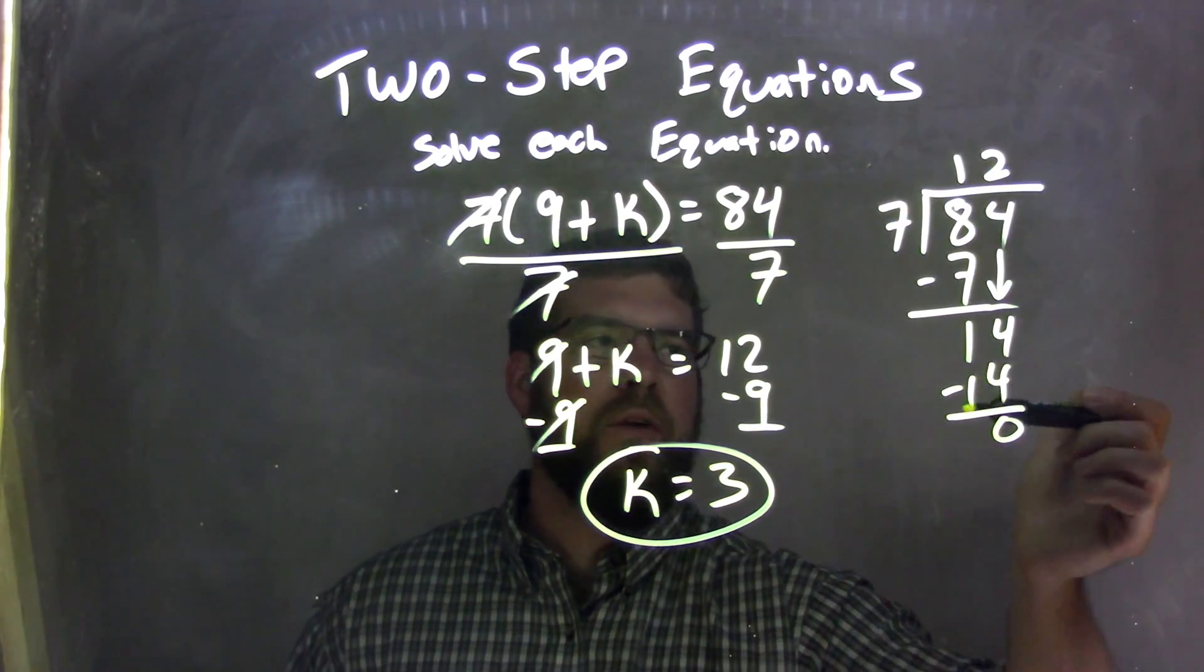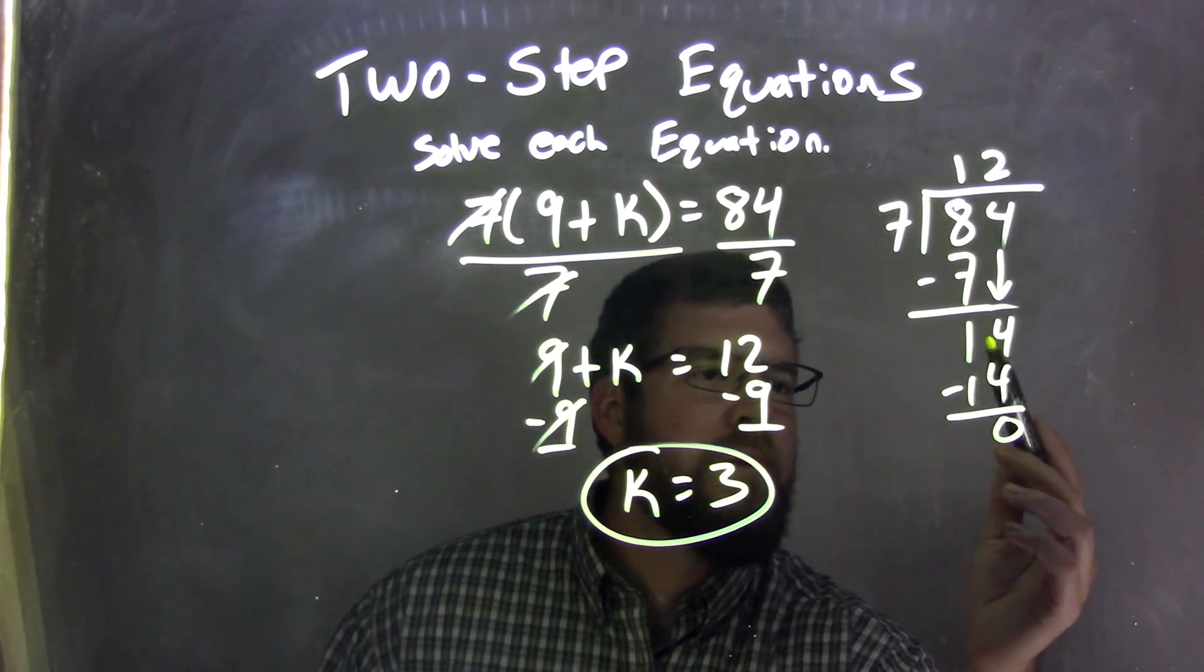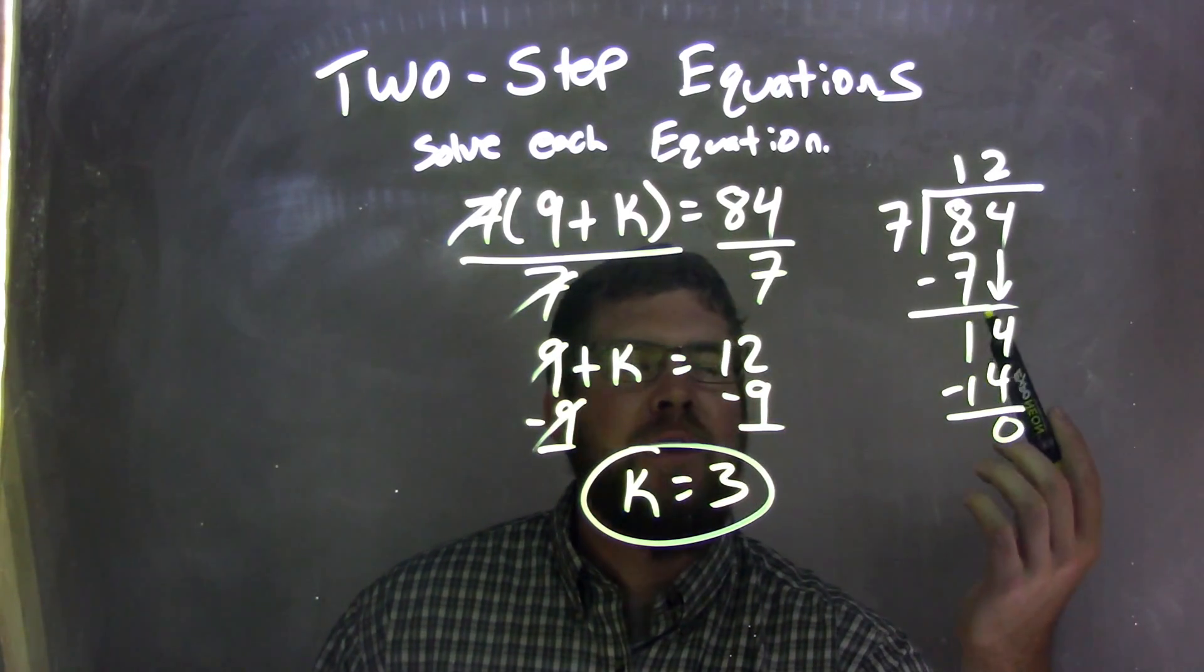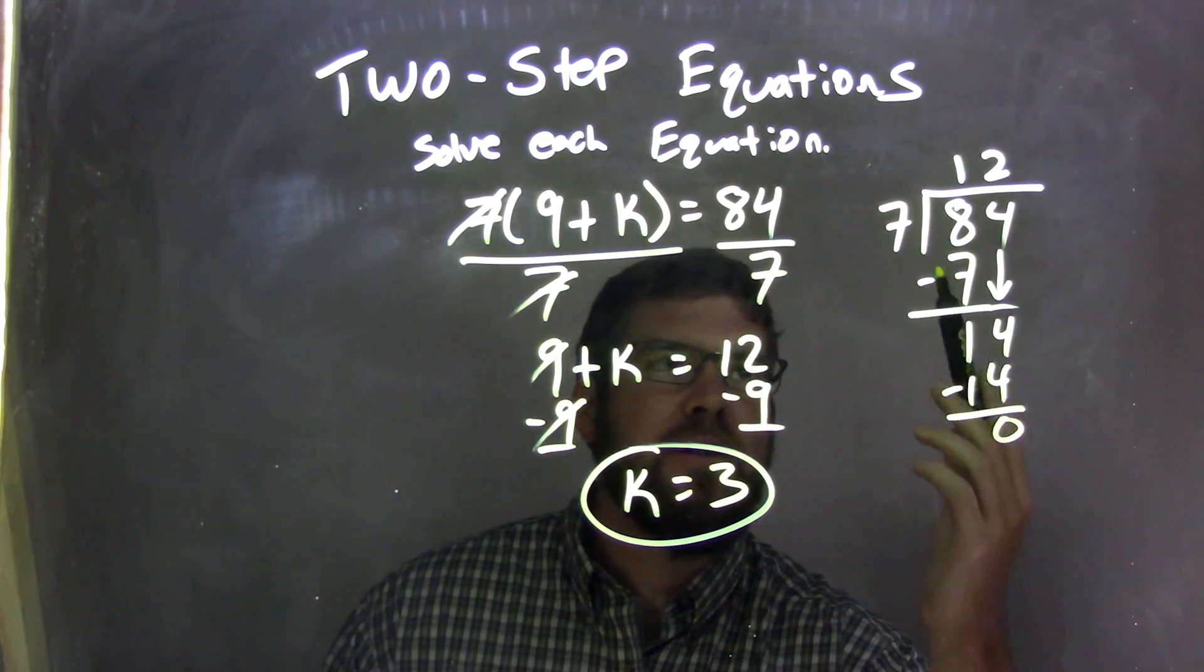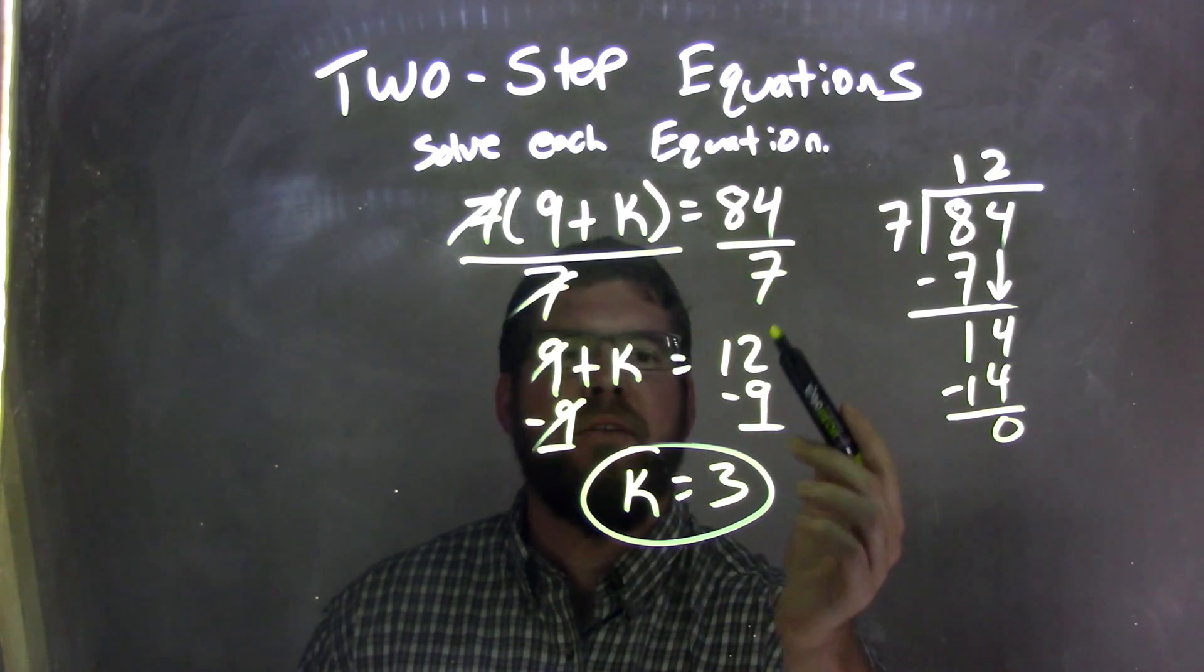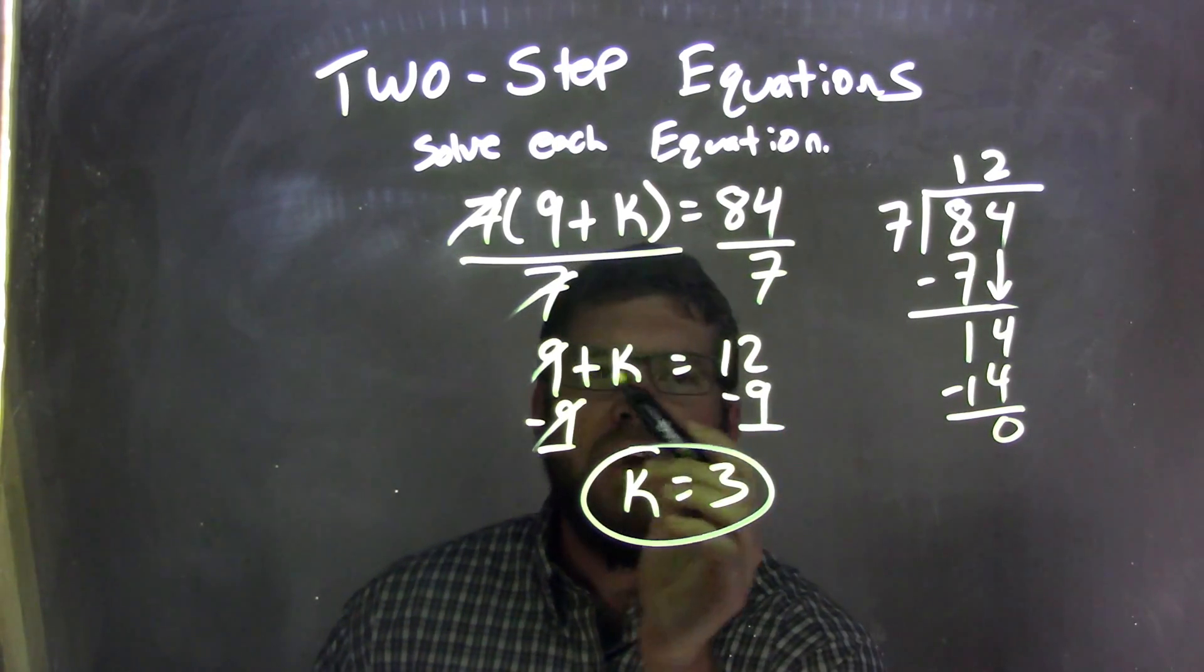7 goes into 14 two times. 2 times 7 is 14. So 14 minus 14 is 0. And so now we have 7 goes into 84 12 times. So 84 divided by 7 is 12. So I have 9 plus k equals 12.